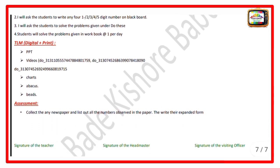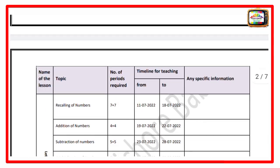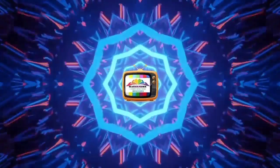For final assessment, students collect any newspaper, list out all the numbers observed in it, and write their expanded form. This concludes the 5th class lesson plan. Thank you.